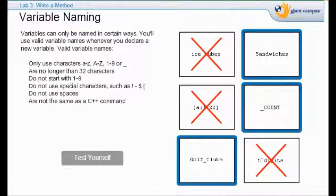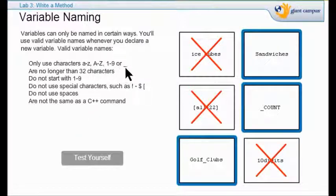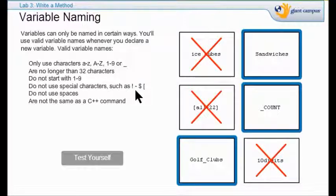One thing you need to keep straight when you're naming a variable — any kind of variable — is that you cannot use the same name as a C++ command. You cannot name a variable 'string' or name it 'int'. When naming any variable, you can only use characters A through Z, capital letters, and numbers 1 through 9, or underline. Don't start with a number, and don't use special characters like quotation marks or spaces.